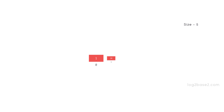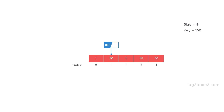Now let us see what happens if the key is not present in the array. So again we have an array of size 5 and here the search key is 100. Now we will start comparing the key and the elements in the array. So let us start from index 0. So 1 will be taken and compared with 100 — it is not the same, so we move to the next element. Take 20 and compare with 100. Again it is not the same.